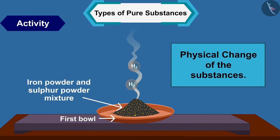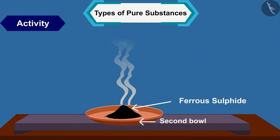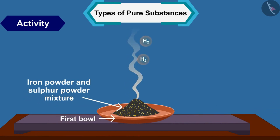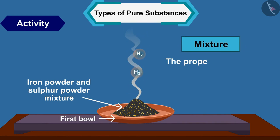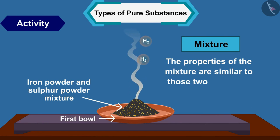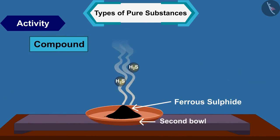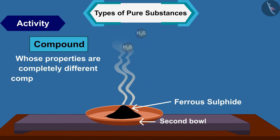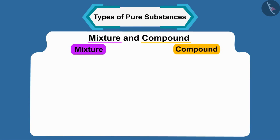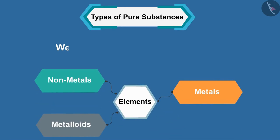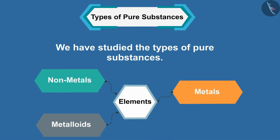This happened because the action done in cup one resulted in a physical change of the substances, while the action in cup two resulted in chemical changes. The material in cup one is a mixture of iron and sulfur — its properties are similar to those of the two elements. The material in cup two is a compound whose properties are completely different compared to the combining elements. In this table you can see the difference between a mixture and a compound. Today we have studied the types of pure substances.